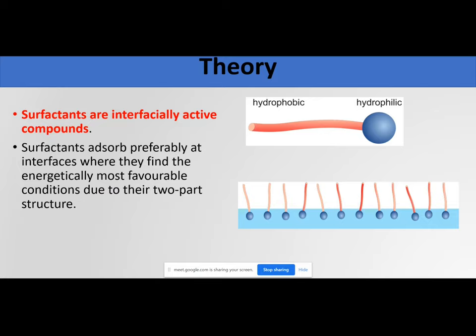I hope surface tension is clear from the practical perspective. The next important thing in this practical is what a surfactant is, what critical micellar concentration is, and how we can find the CMC of a surfactant using surface tension. First, what are surfactants? Surfactants are interfacially active compounds — they actively act at the interface and can significantly influence surface tension.